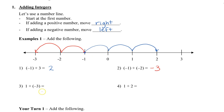The next one, we have one plus negative three. So we start at one, and we're going to add negative three. So we're going to go in the negative direction: one, two, three, and we end up at negative two.